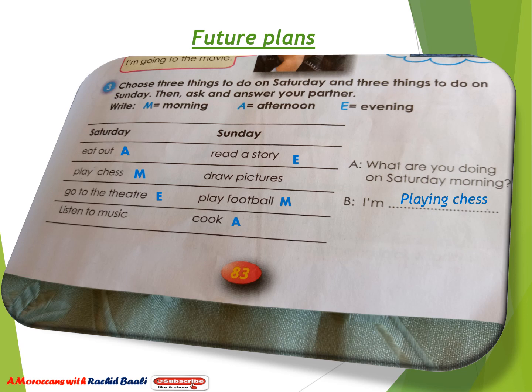In our last lesson we learned that we can ask and answer about future plans using the present continuous. We saw this table and this example: 'What are you doing on Saturday morning?' with the answer 'I'm playing chess.' In the question, the verb 'do' is in the present continuous form, and in the answer, the verb 'play' is in the present continuous form — talking about future plans.